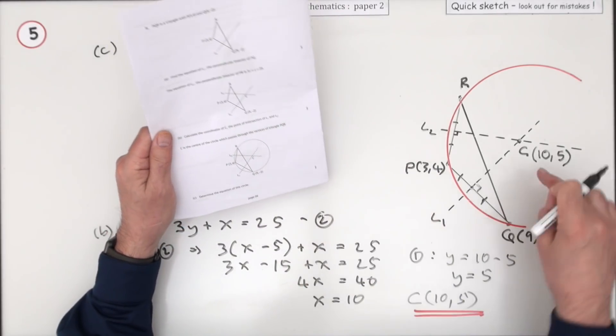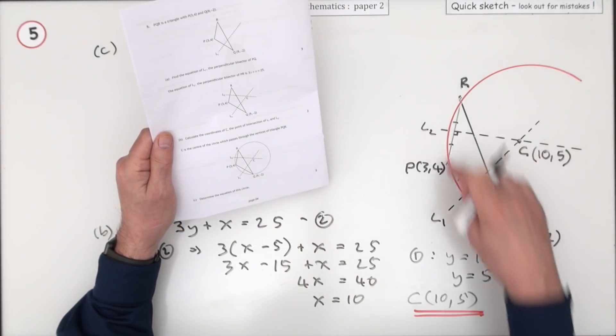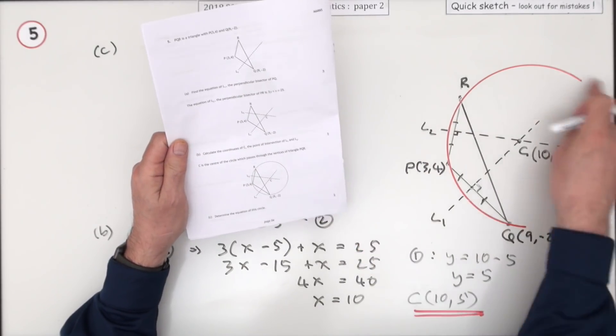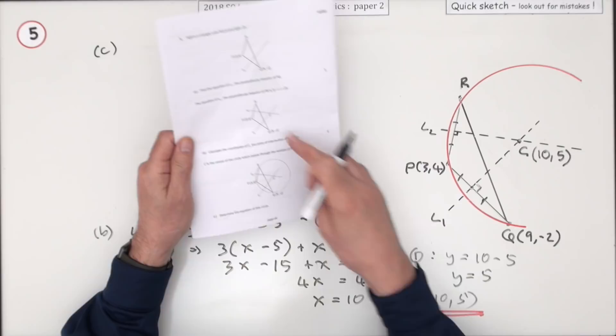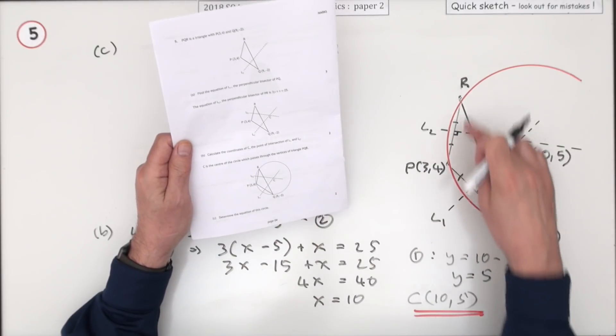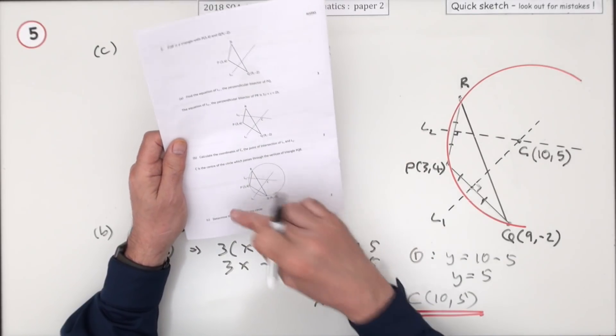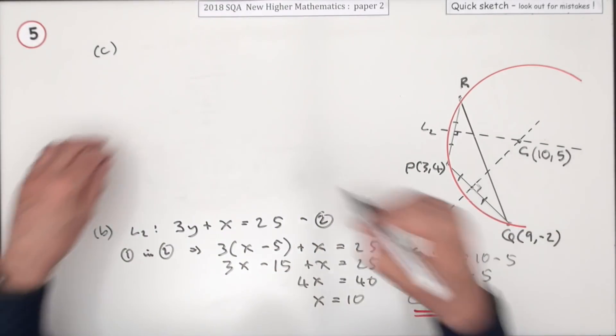Now for the final two marks, C happens to be the center of a circle passing through those three vertices of the triangle. That's called the circumcircle. You should have realized that was happening all the time anyway, because if they are chords, the perpendicular bisectors go through the center. Determine the equation of this circle.